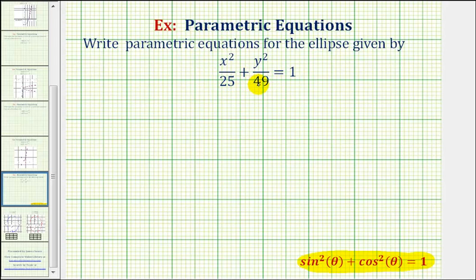it might also be helpful to write this equation in the form of x divided by 5 squared. Notice how this is still x squared divided by 25 plus y divided by 7 squared equals 1.